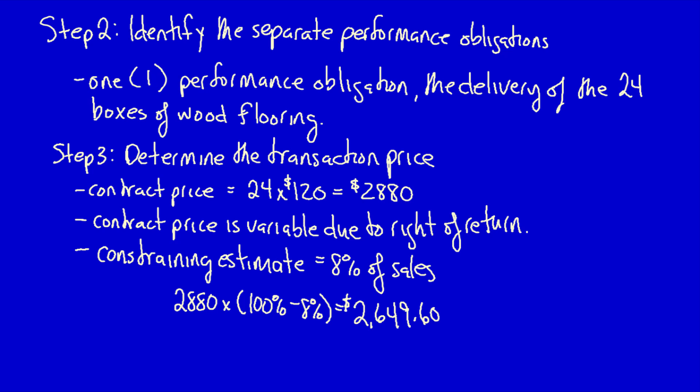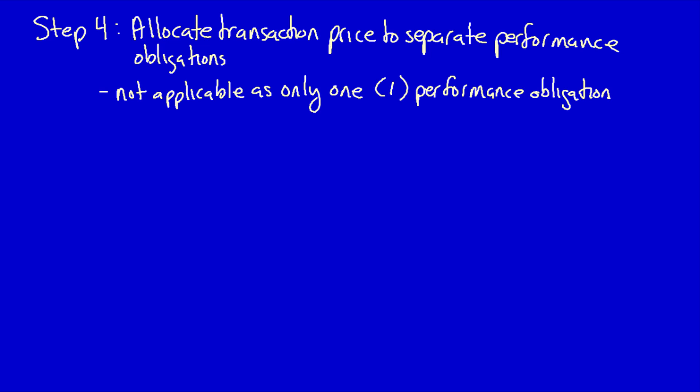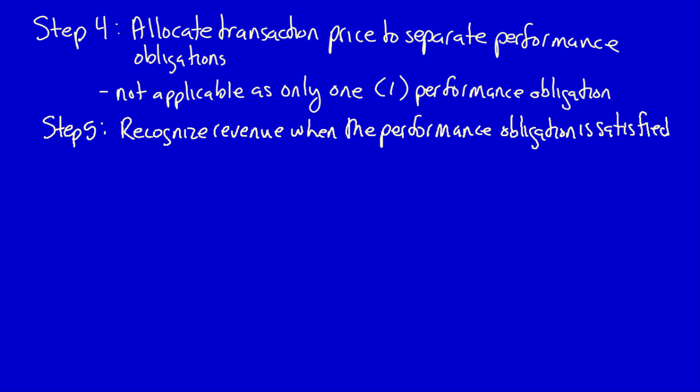Let's move on to step 4. Allocate transaction price to the separate performance obligations. This isn't applicable because there's only one performance obligation. Moving on to step 5. Recognize revenue when the performance obligation is satisfied. On April 2nd, when Green Inc. delivers the 24 boxes of wood flooring to BJB Inc., that's when control of the wood has been transferred.